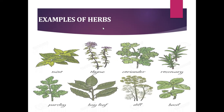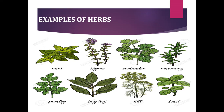Here we can see some more examples of herbs: mint, rosemary, parsley, bay leaf, dill, and basil. All these plants are short plants with thin and green stems. They do not have many branches and their lifespan is between a few months to one year, so they are called herbs.